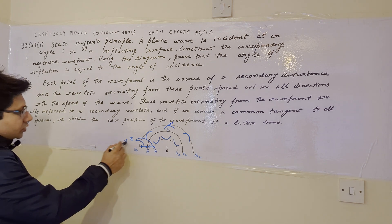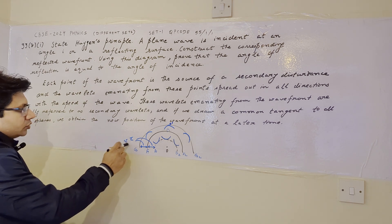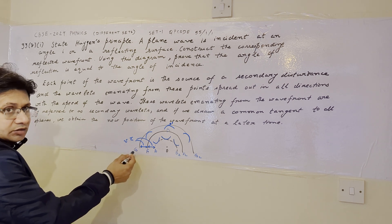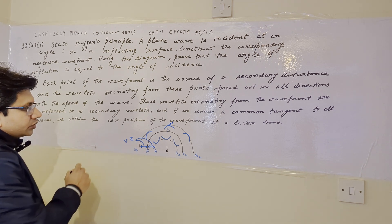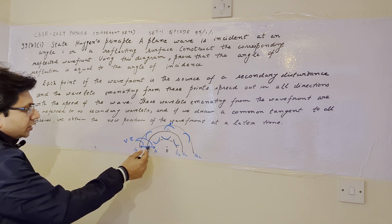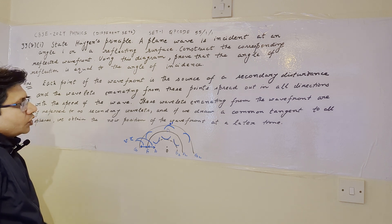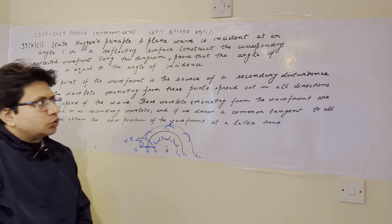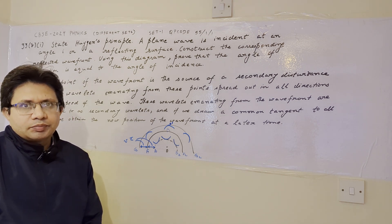The new wavefront G1G2 corresponds to the secondary wavelets and is the locus of points after a certain time interval. The term v×τ represents the distance, because velocity multiplied by time duration equals the distance travelled by the wavefront. This completes the answer to the first part of the problem.